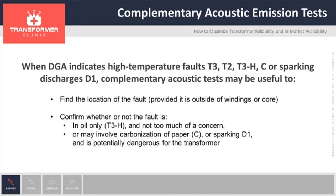When DGA indicates a high temperature fault T3, T2, T3 in oil, C, or electrical discharge D1, complementary acoustic tests may be very useful. First, to find the location of the fault, provided it is not inside the windings or core. And second, to confirm whether the fault is in oil only and therefore not too much of a concern, or it may involve carbonization of paper or discharges, and is potentially dangerous for the transformer.